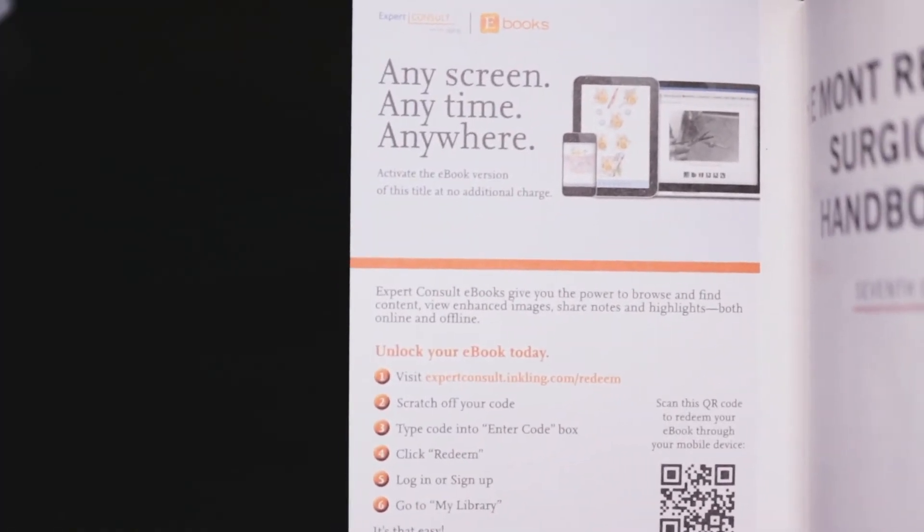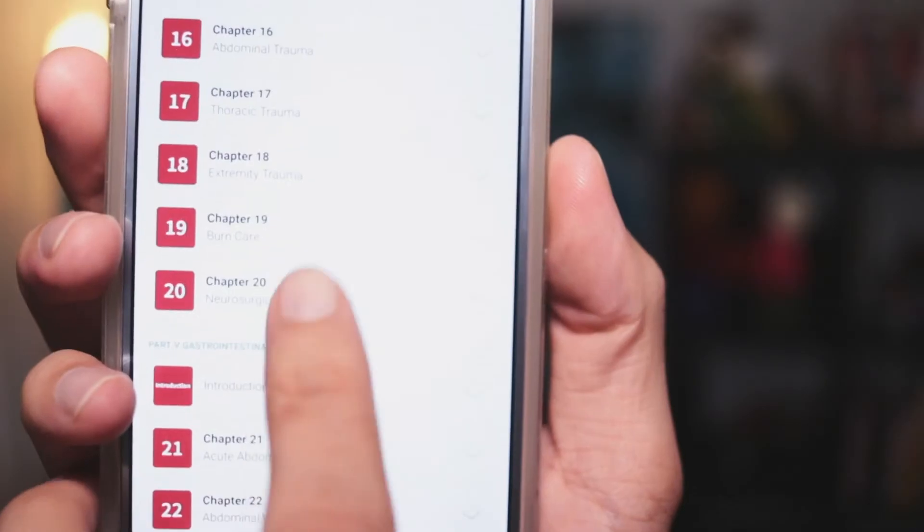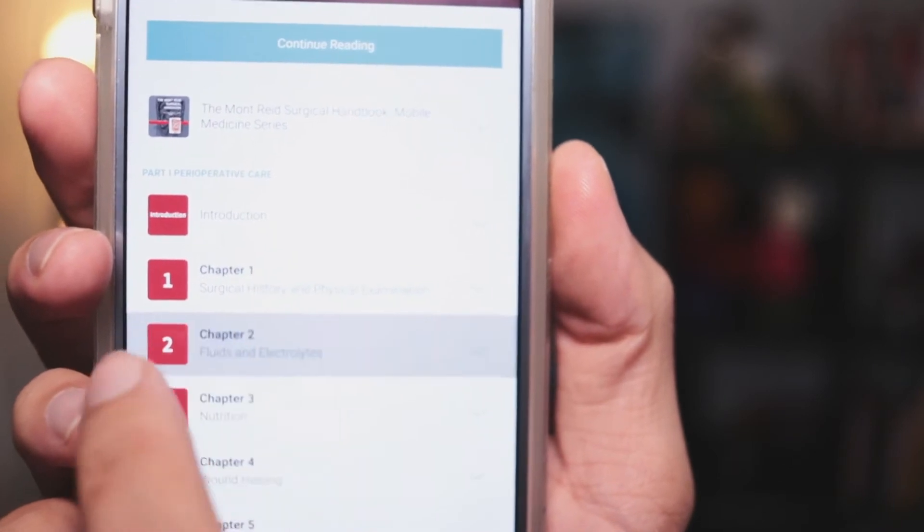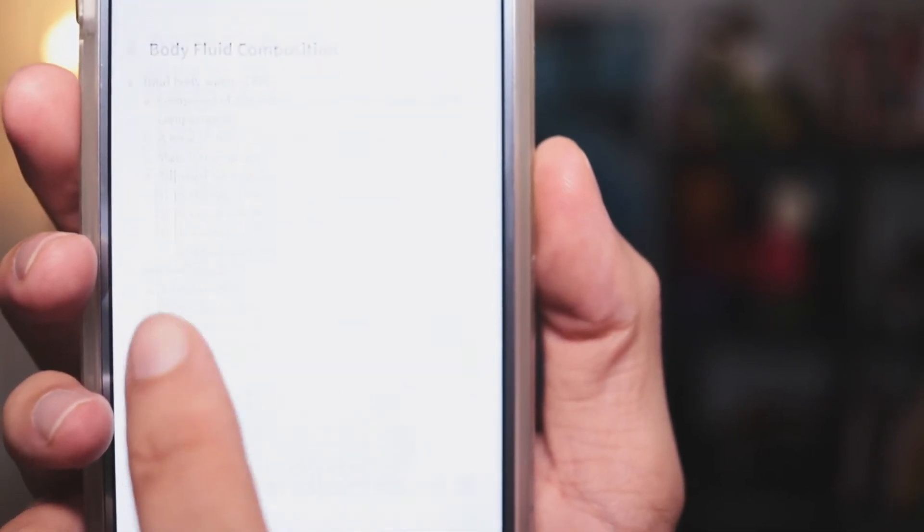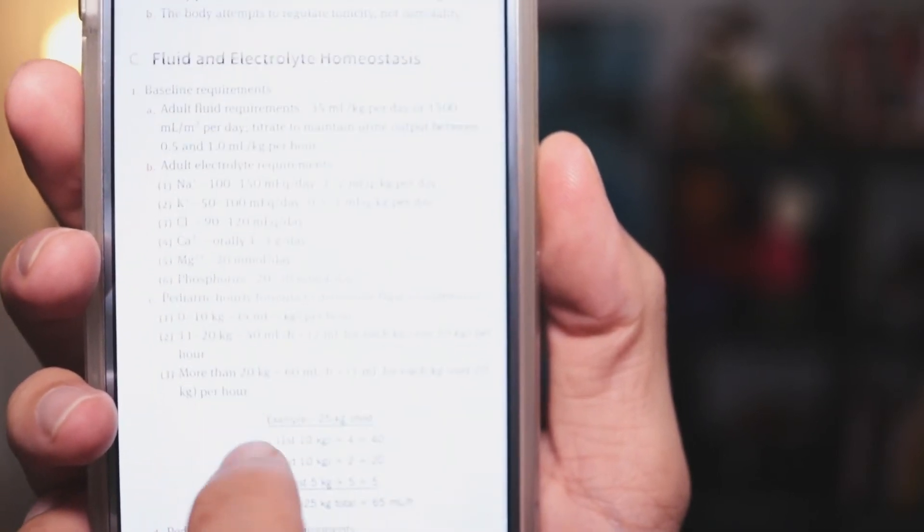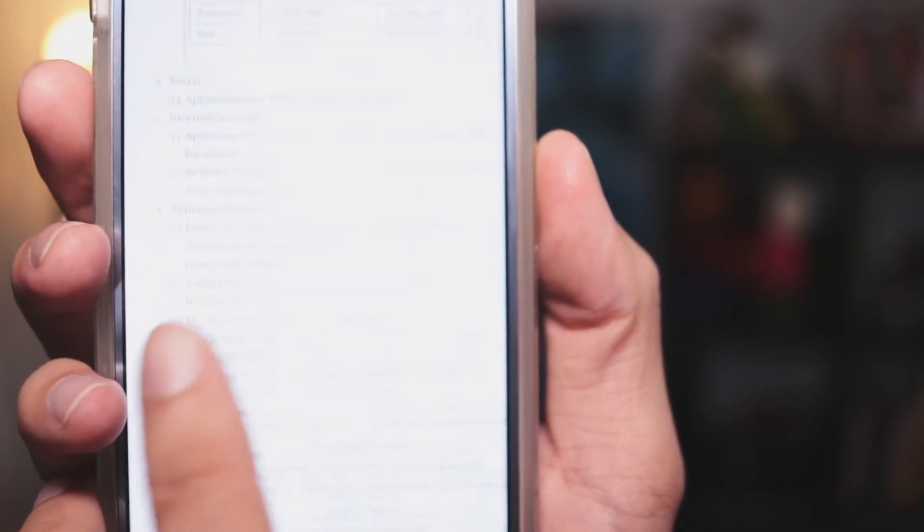One very nice thing about this handbook compared to Surgical Recall is that Montreide actually has an app and a PDF that is included in the hard copy version. Combined with the bullet point format, the information is very readily available for you. So coming in at number two, it's the Montreide Surgical Handbook.